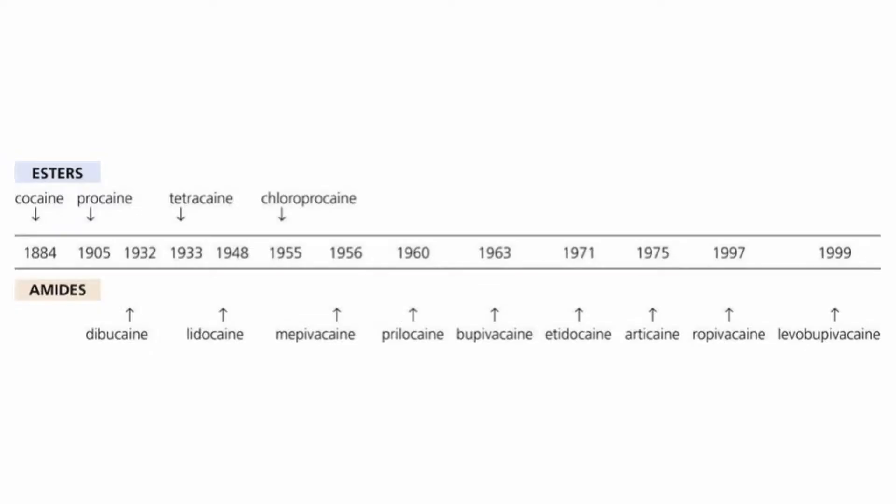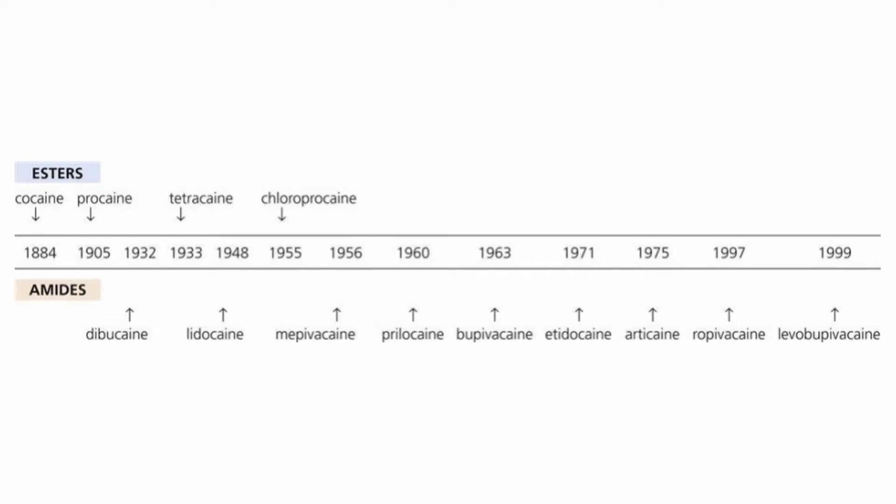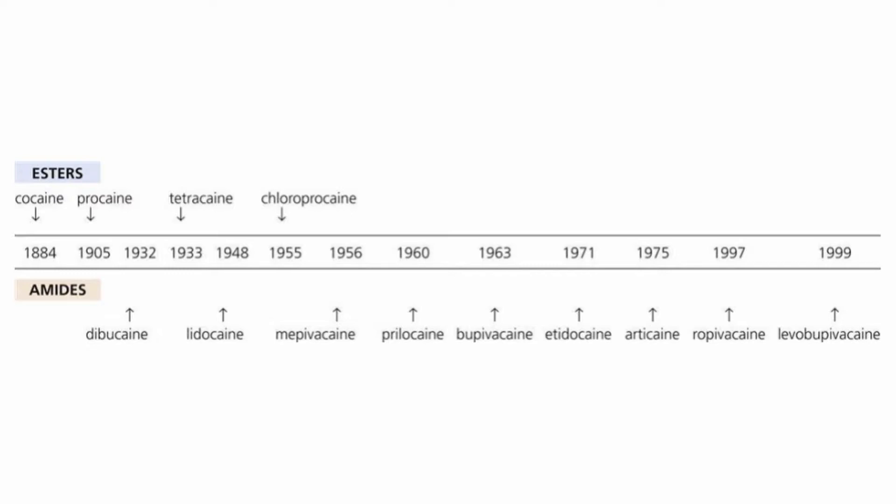Focus on this chart of amides — the important thing is to be able to tell from the name whether it's an ester or an amide. You can easily do so by the double 'i' in all amides. Amides have two i's, esters one. You will be using two amides on a regular basis almost daily — lidocaine and bupivacaine — so it's worth spending the time to memorize. The others, not so much.